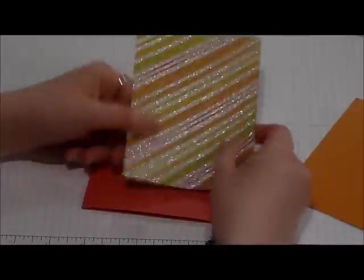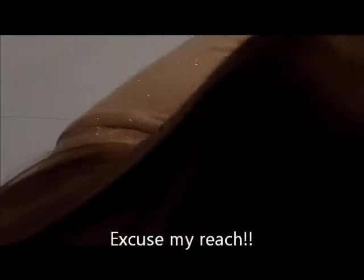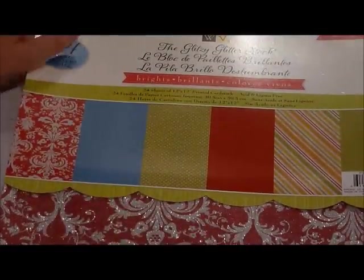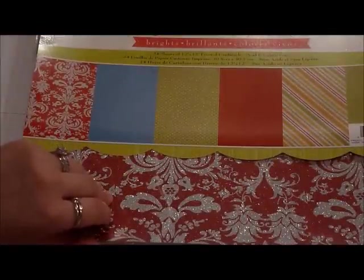And then this pattern piece of paper right here is from the Dye Cuts with a View, the Glitzy Glitter Stack. I got this from Michael's last weekend or a couple weekends ago. It was on sale. It's really nice glitter paper so it doesn't come off with your hands. So there's nothing on my hands. We used this one right here. They give you 3 or 4 sheets of each one so it's really nice. It's just really nice quality.